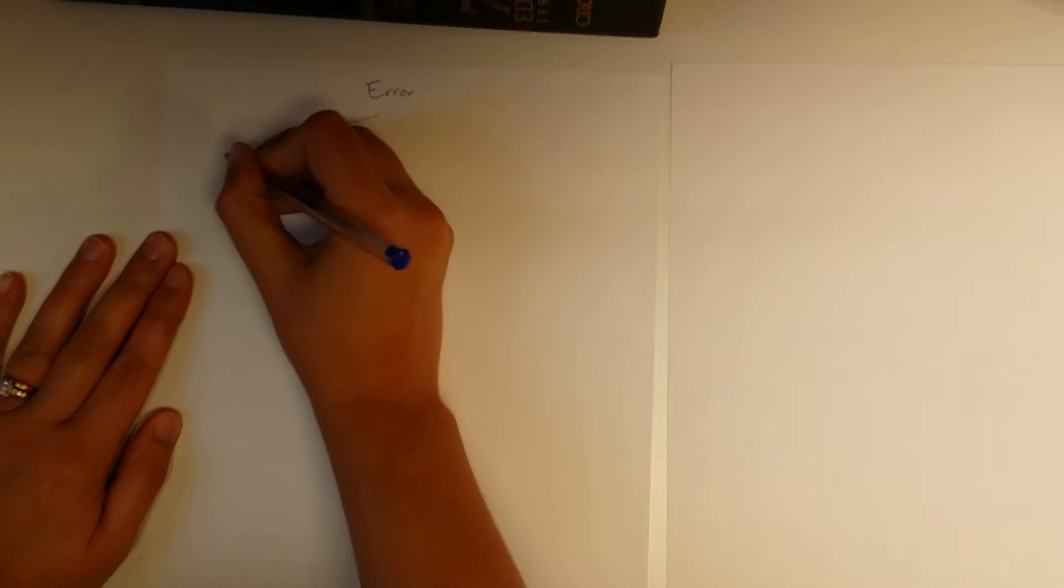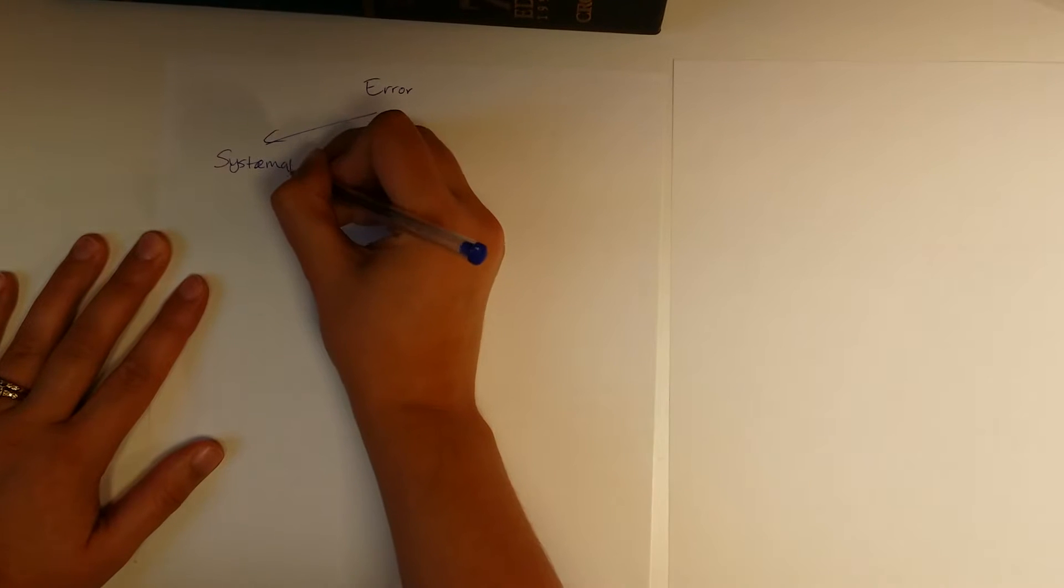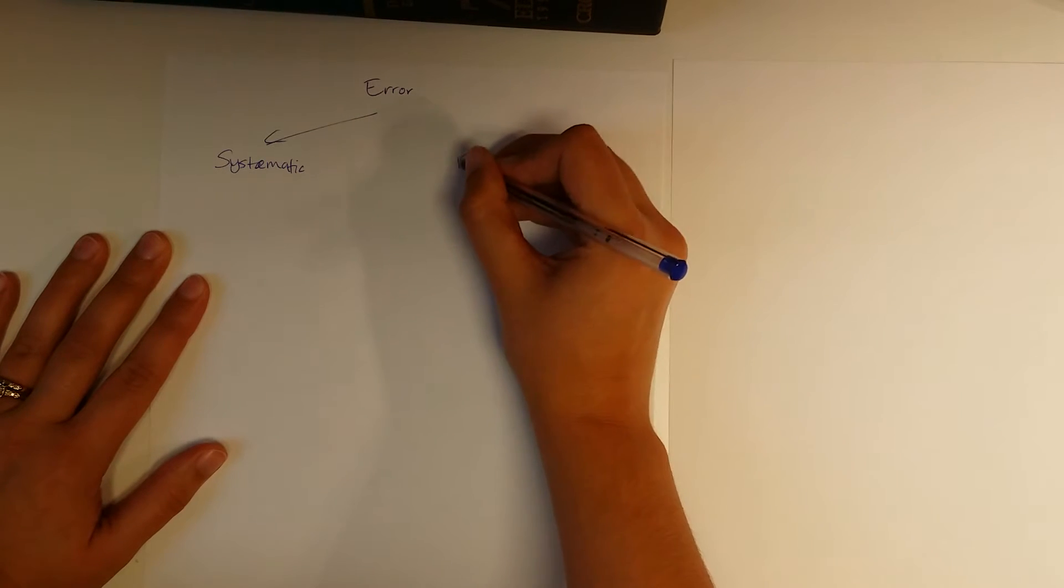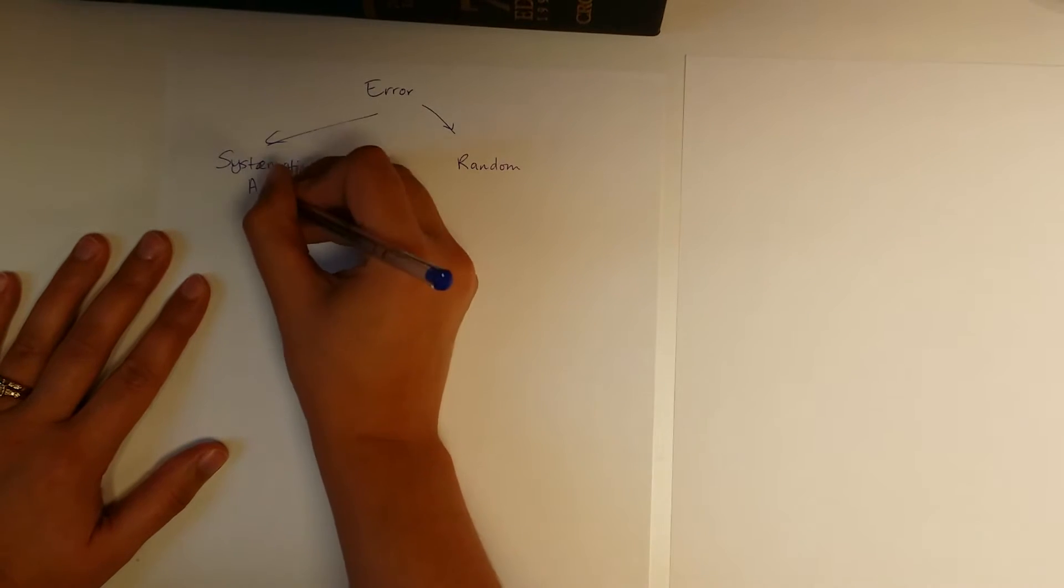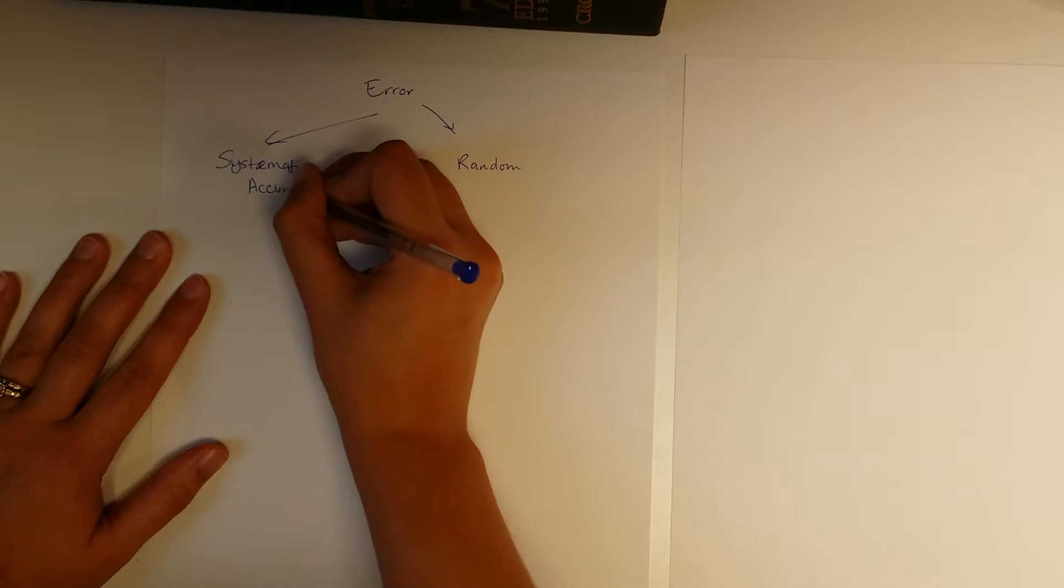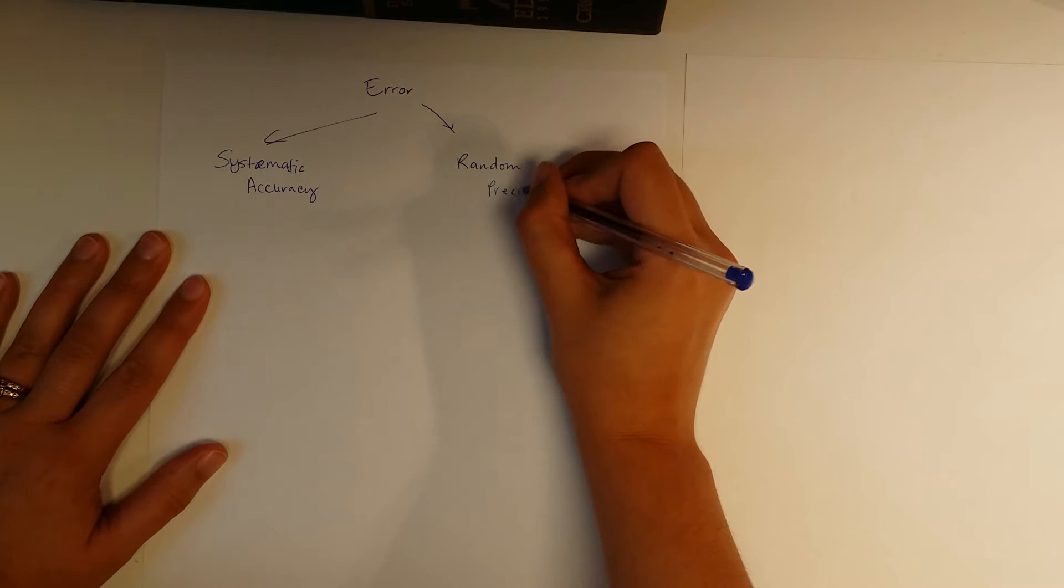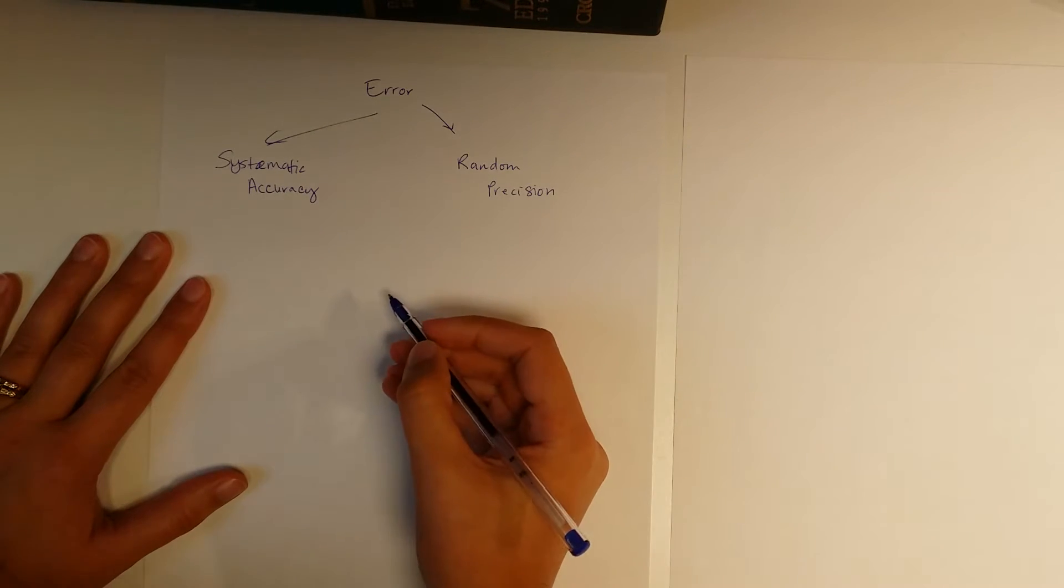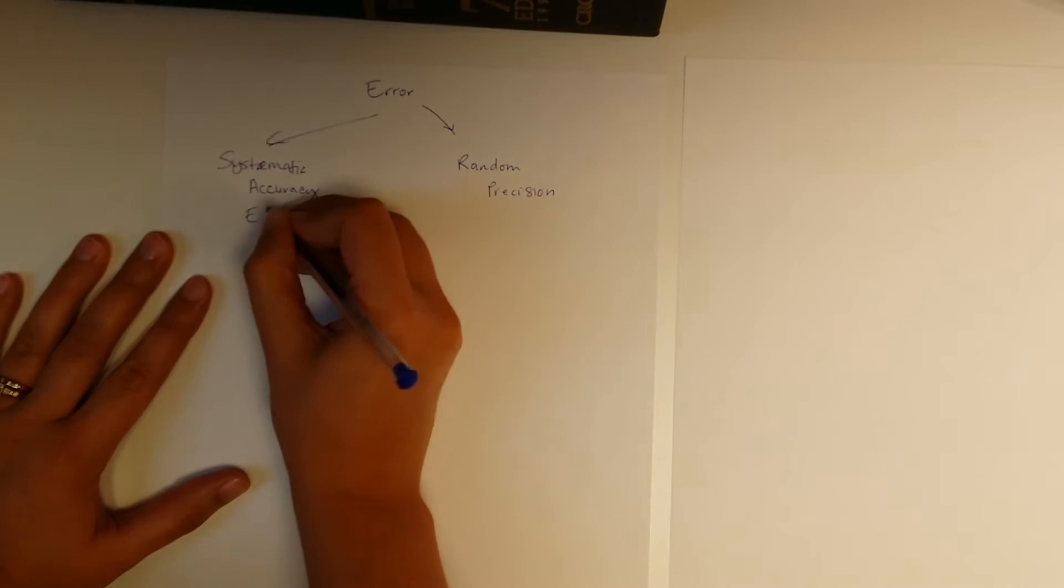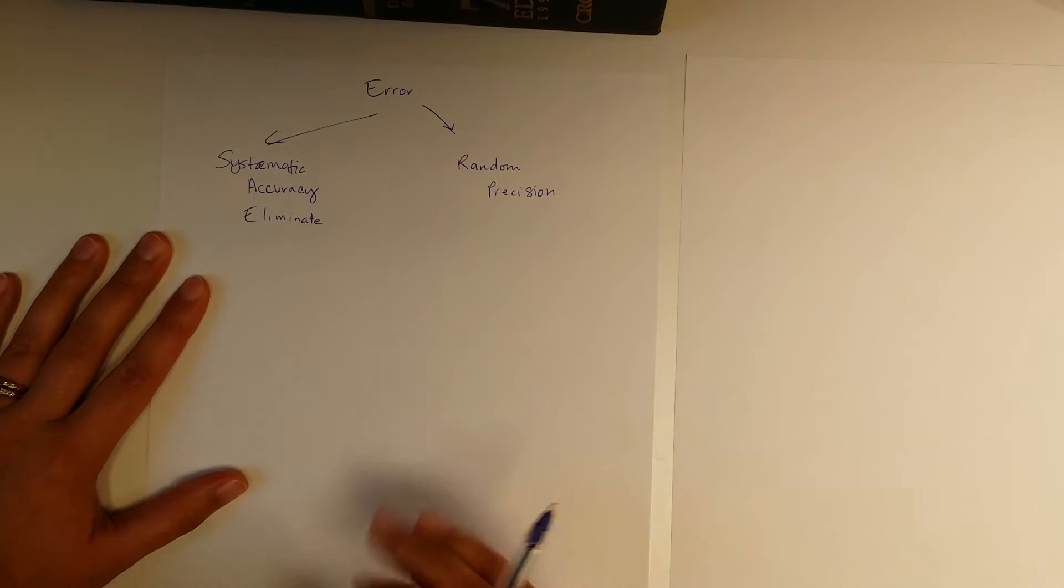Importantly we have systematic and random error. So how do you distinguish the two? The important characteristics are that systematic error affects accuracy and random error affects precision. We always have random error as long as we're making a measurement. So the most important thing is that we always want to get rid of any kind of systematic error.